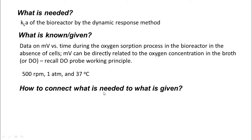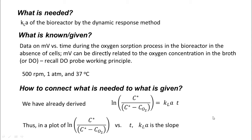The third question: how to connect what is needed to what is given? We have already derived that log of C star by C star minus C, C is the dissolved oxygen level concentration, C star is the concentration in the liquid phase in equilibrium with the gas phase, equals KLA times T. Y equals MX. This is Y and T is X. KLA is the slope. Therefore, if you plot log of C star by C star minus C versus T, we will get KLA as the slope.